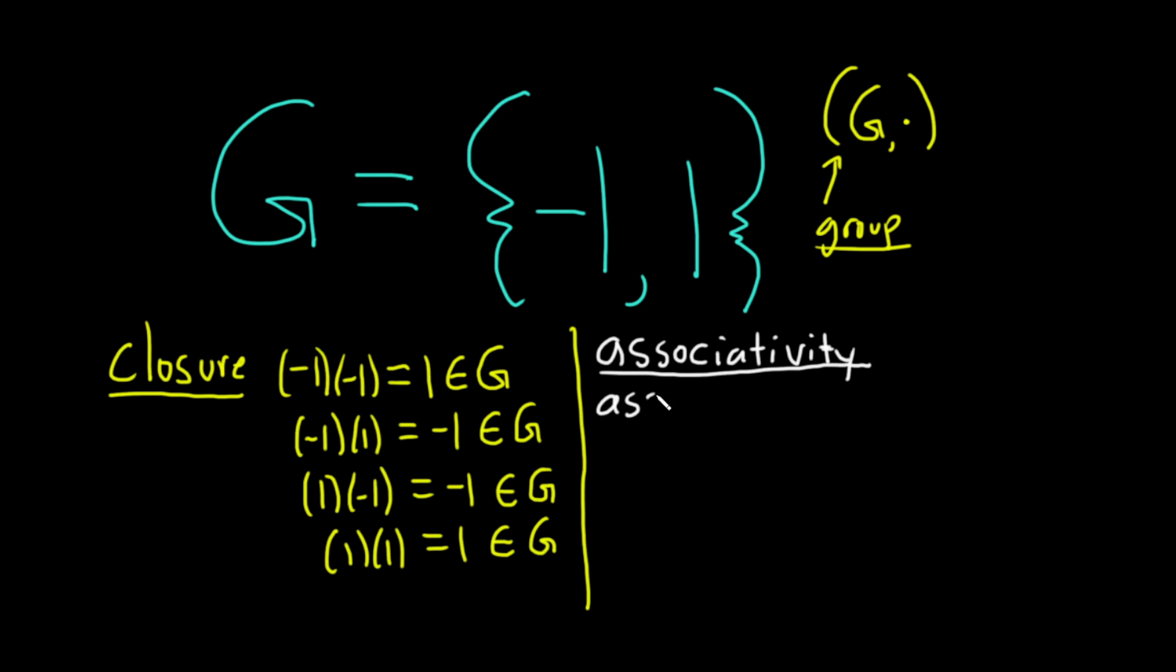the multiplication here is also associative. So you can just say associative because multiplication of real numbers is associative. My pen is failing, sometimes it has issues. So we have associativity taken care of, no issues there.